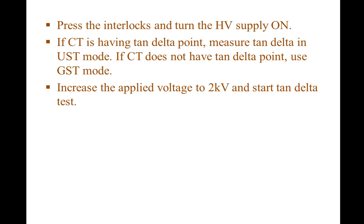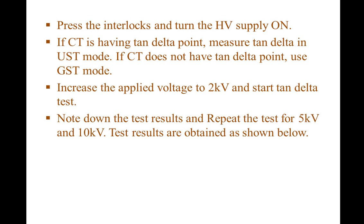After doing all the connections, press the interlocks of the kit and turn the high voltage supply on. Increase the applied voltage to 2 kV and start the tan delta test. Note down the test results and repeat the test for 5 kV and 10 kV.